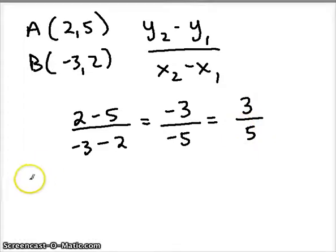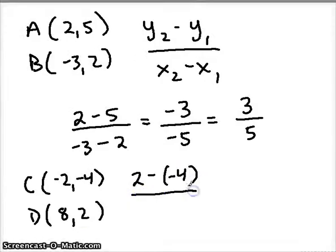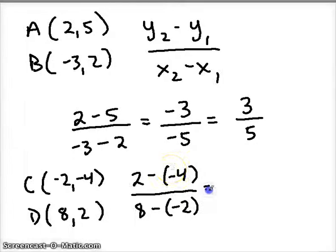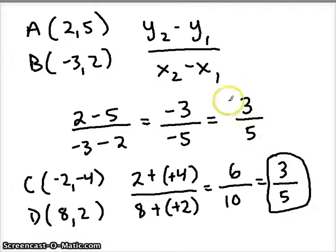Let's figure out the slope of CD. C was (-2, -4) and D was (8, 2). Using my slope formula: Y2 is 2, minus Y1 which is negative 4 — that becomes 2 plus 4. X2 is 8, minus X1 which is negative 2 — that becomes 8 plus 2. So we get 6 over 10. Reducing by dividing top and bottom by 2 gives us 3 over 5. There's the slope of line CD.